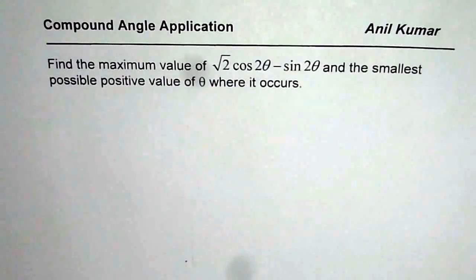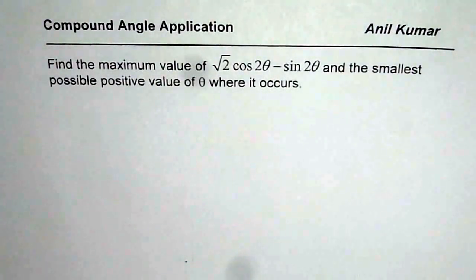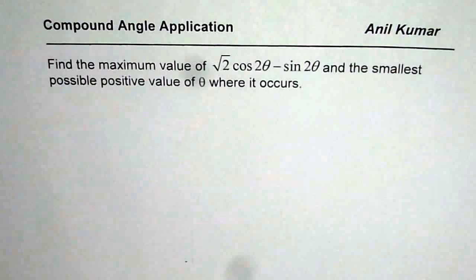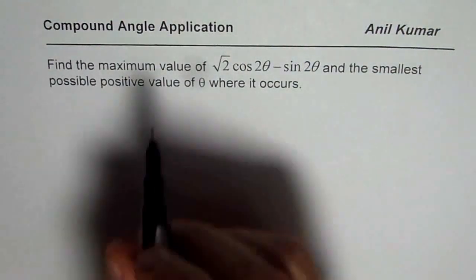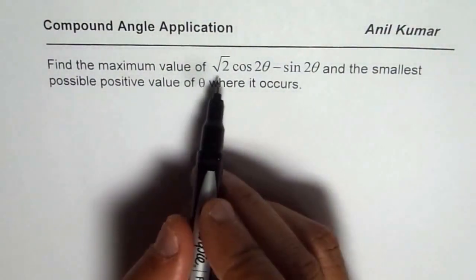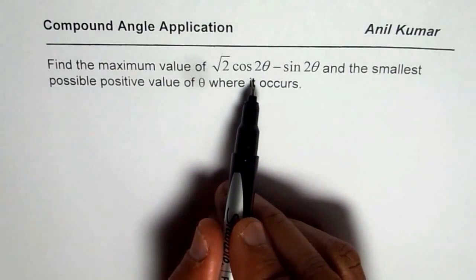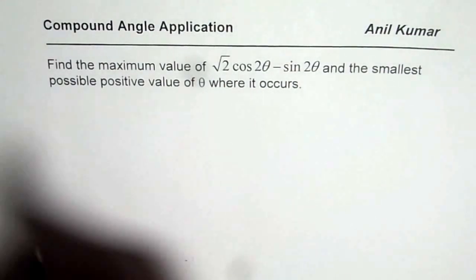I am Anil Kumar and here is a very interesting application question where we are going to use compound angle formula. The question is: find the maximum value of √2·cos(2θ) − sin(2θ), and the smallest possible positive value of θ where it occurs. To find the maximum value, we should be able to write this as one trigonometric function, and that is what we will learn in this video.